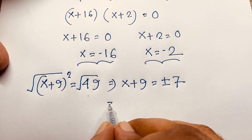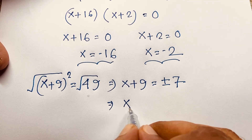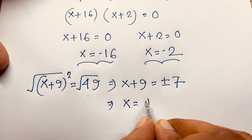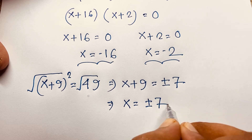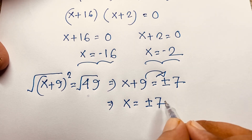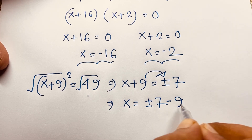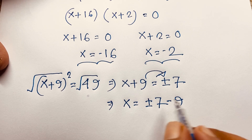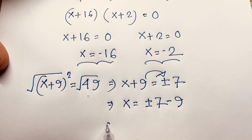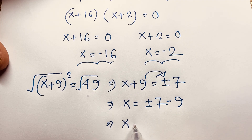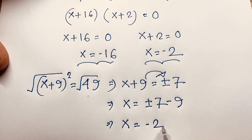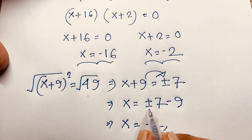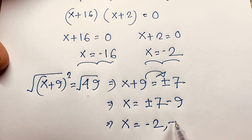Then here, x is equal to plus or minus 7. If I move 9 to this side, it will be negative 9. So x is equal to minus 2 if I take the positive value of 7: 7 minus 9 equals minus 2. And if I take the negative value, minus 7 minus 9 equals minus 16.